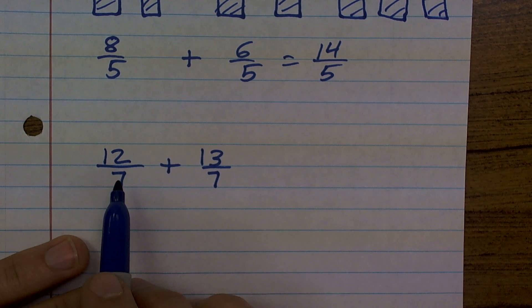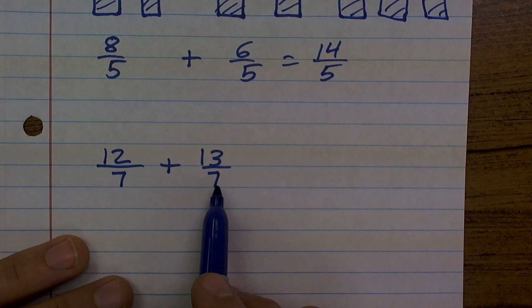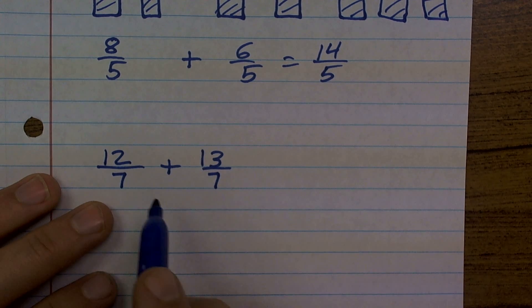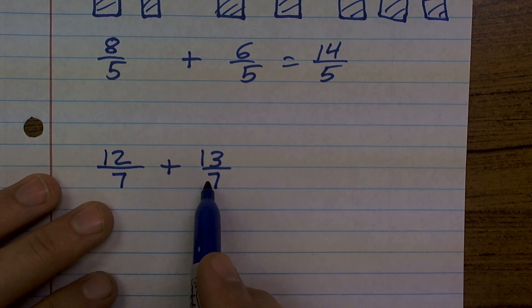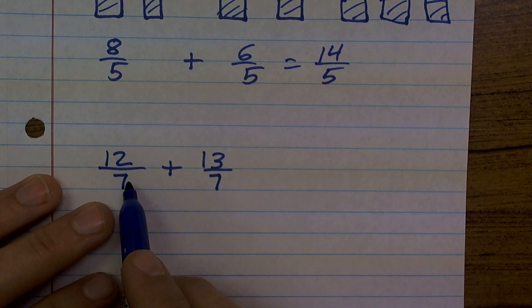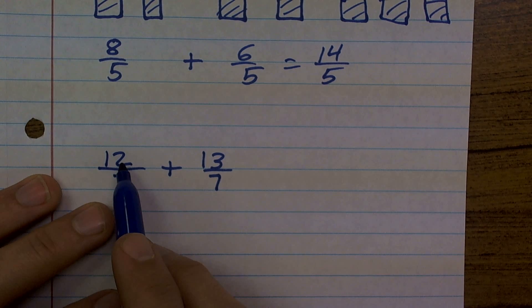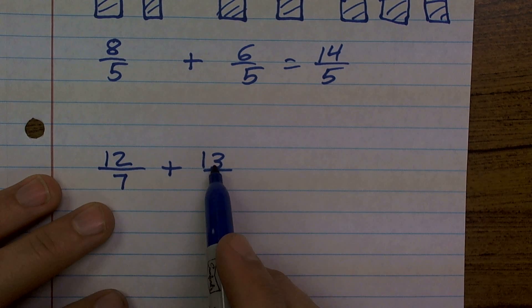That's telling us how many times we need to section off the whole. There's seven pieces in a whole, but I've chosen 12 pieces and 13 pieces.